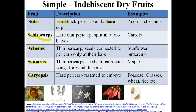In schizocarps, the pericarp is hard but thin — unlike nuts, where the pericarp is thick. The fruit splits into two halves. An example of schizocarps is the carrot fruit.